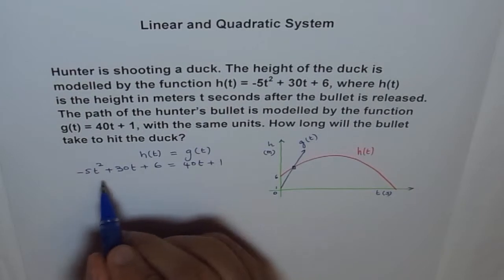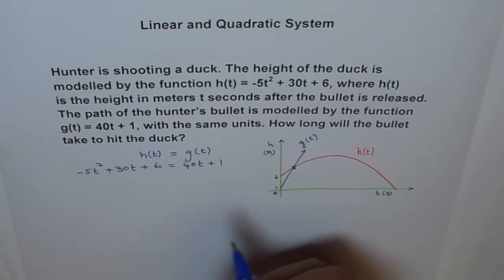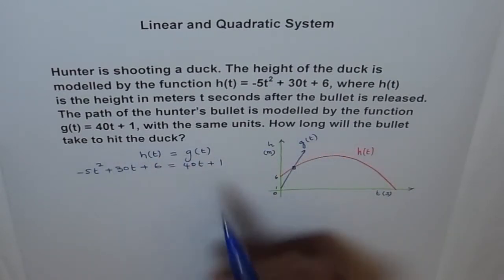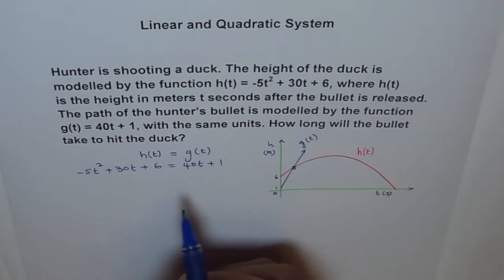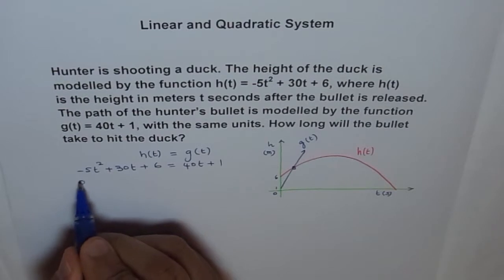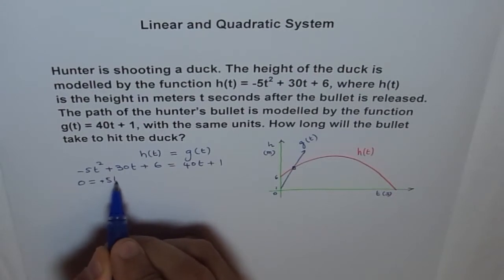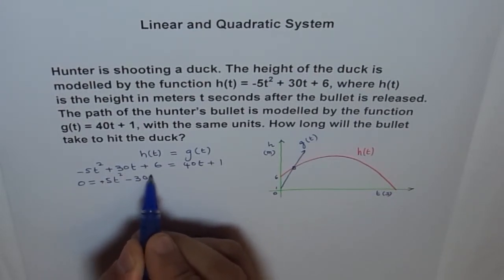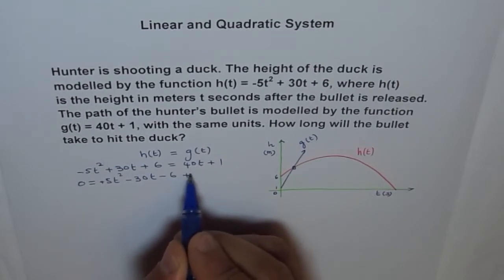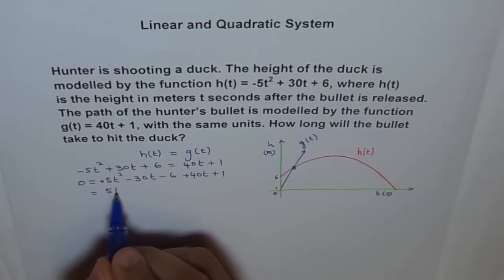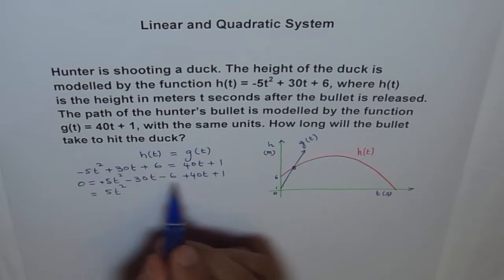Now, to solve this, we have to bring all in one side and then solve for t. How long will the bullet take to hit the duck? So solve for t. The units are seconds. Now, what we can do is bring all this here. 0 equals, when we bring on that side, signs will change. So this becomes +5t² - 30t - 6 and then +40t + 1. Now, we will combine the like terms. Like terms here are 5t² and -30 plus 40 is +10t and this is -5.